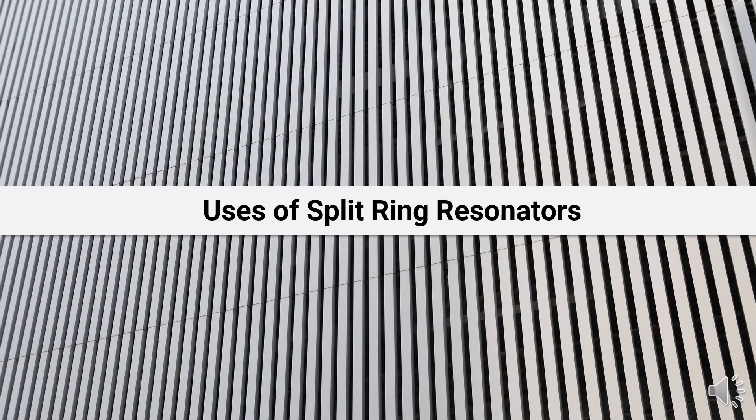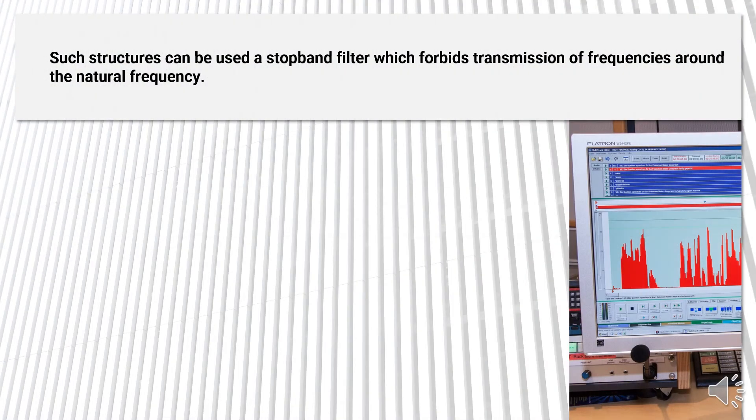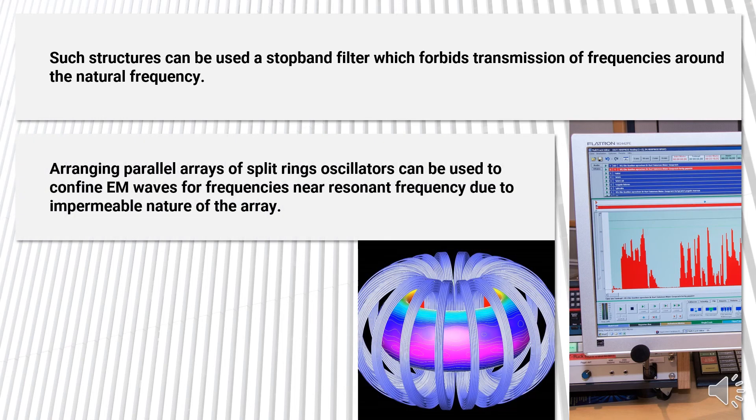Now let's have a look at the uses of split-ring resonators in various fields. As transmittance value greatly decreases near natural frequency, such structures can be used as a stop band filter which forbids transmission of frequencies around the natural frequency. Also, if we arrange these parallel arrays of split-ring resonators, they can be used to confine electromagnetic waves for frequencies near the resonant frequency due to the impermeable nature of the array.